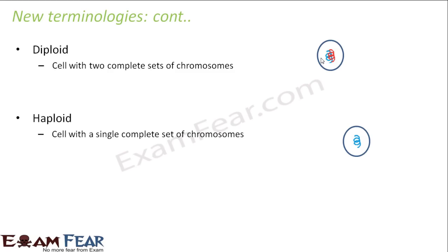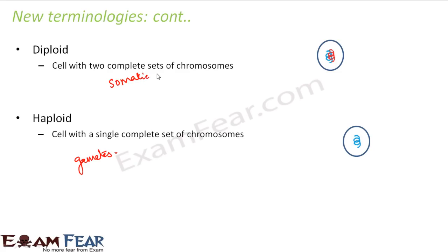A haploid cell is a cell with a single set of chromosomes. Examples of haploid cells are sperm cells and egg cells — that is, the gametes. Each gamete contains only one set of chromosomes and they do not exist in pairs. All other cells of the body — the somatic cells — are examples of diploid cells, having two sets of chromosomes.